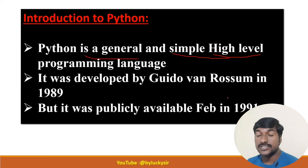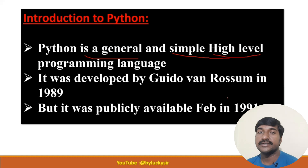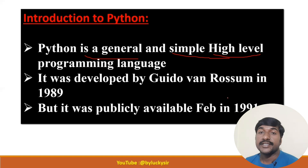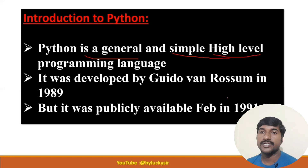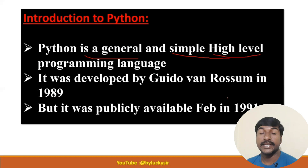Python was developed by Guido van Rossum in 1989, and it was publicly available in 1991 on February 20th. Three main points to remember: Python is a general purpose, high-level programming language, developed by Guido van Rossum in 1989, and publicly available in 1991.